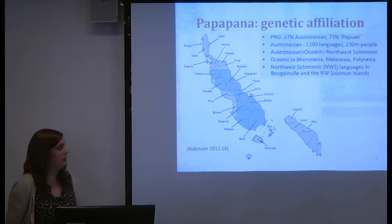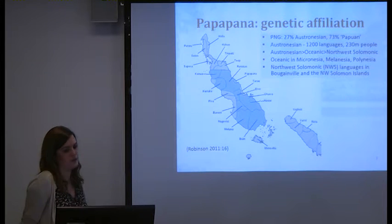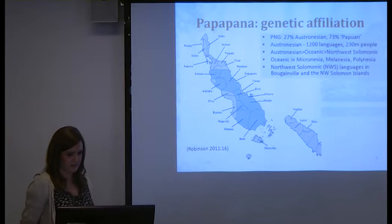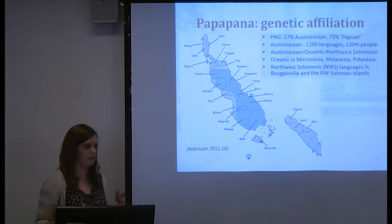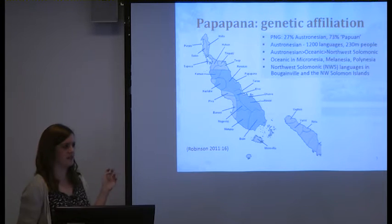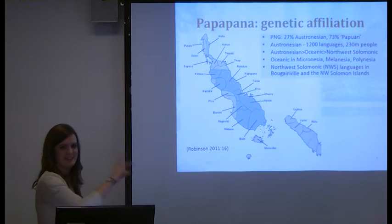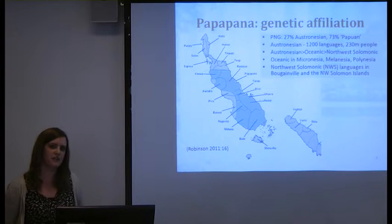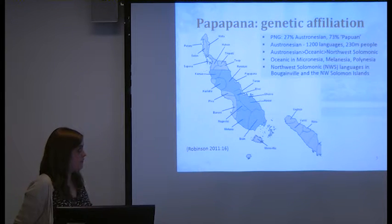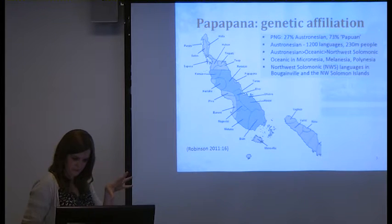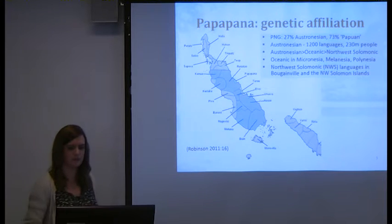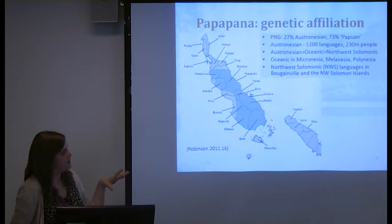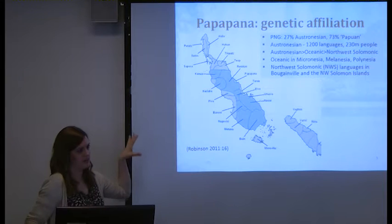Papua Pana is an Austronesian language. In Papua New Guinea, which has about 840 languages, 27% are Austronesian and 73% are Papuan. The Austronesian language family has about 1,200 languages, spreading from Madagascar all the way to Easter Island, and from Hawaii and Taiwan in the north down to New Zealand in the south. There are about 230 million speakers of these languages. Within Austronesian, the Oceanic group includes the Northwest Solomonic subgroup, to which Papua Pana belongs. Oceanic languages spread across Micronesia, Melanesia and Polynesia, with Bougainville situated in the Melanesian area.